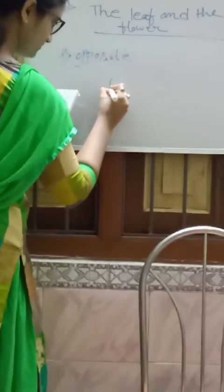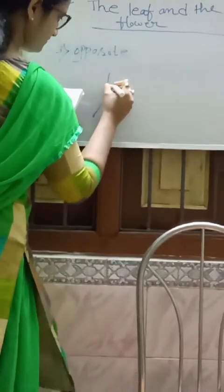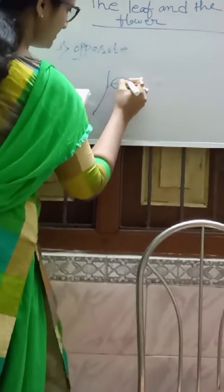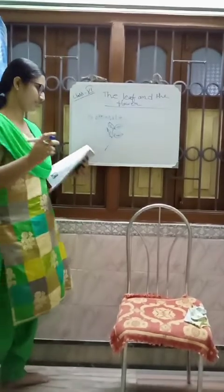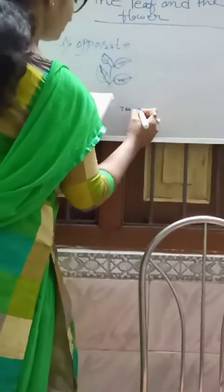In the opposite arrangement, one leaf arises on one side and one more leaf arises on the just opposite side. This kind of arrangement is called opposite arrangement of leaves. An example is Baha.